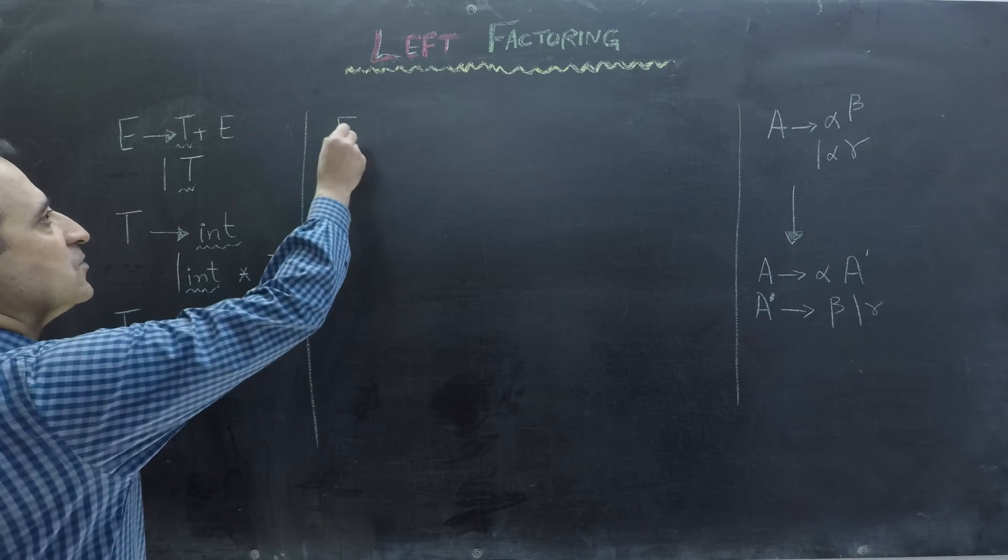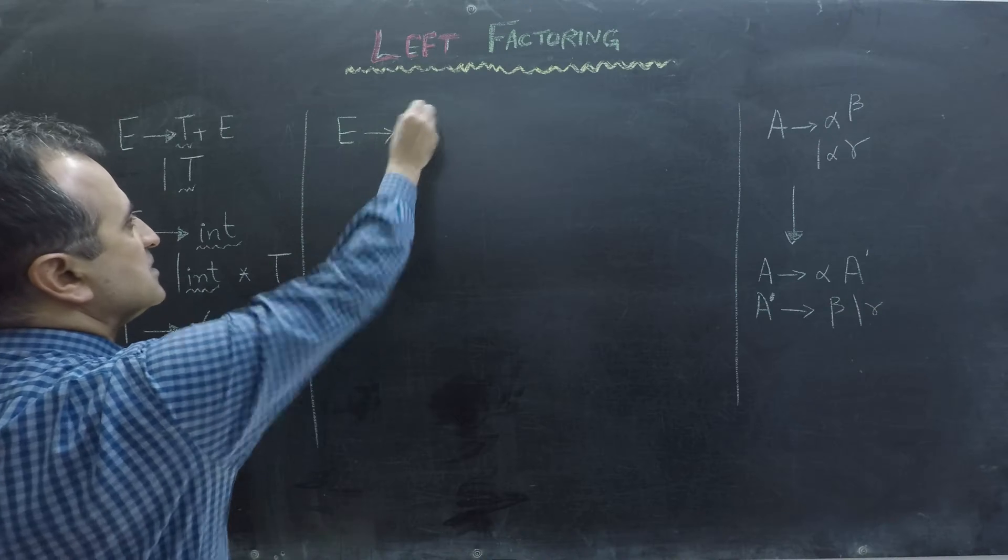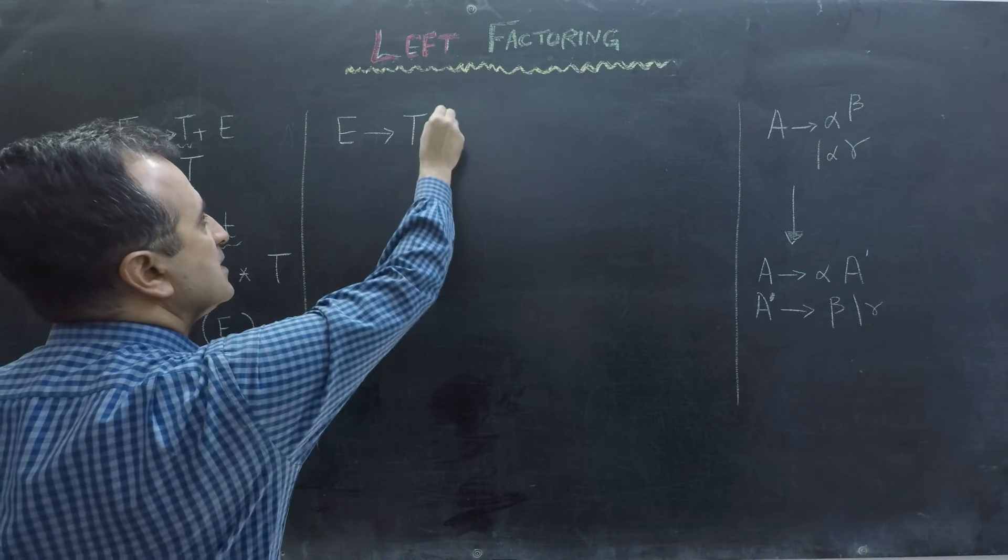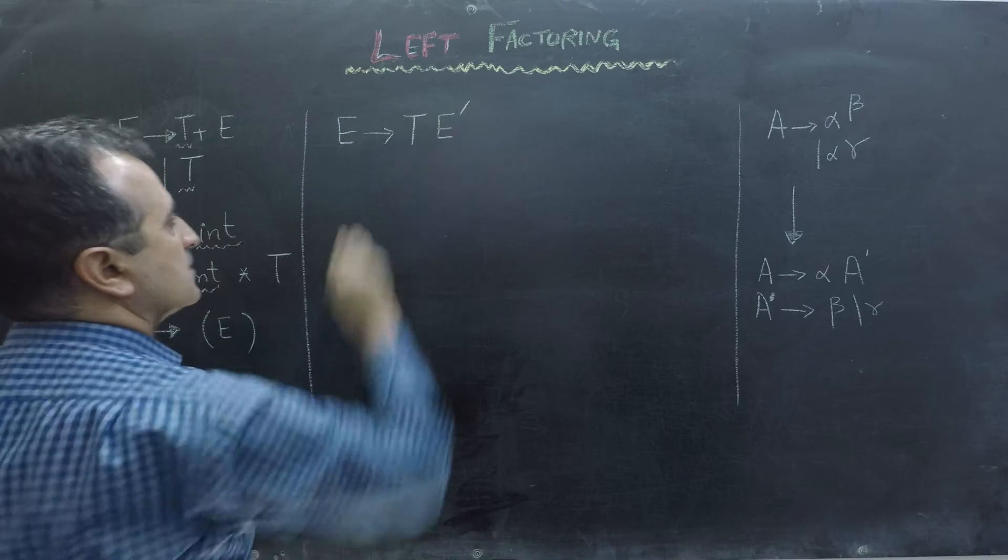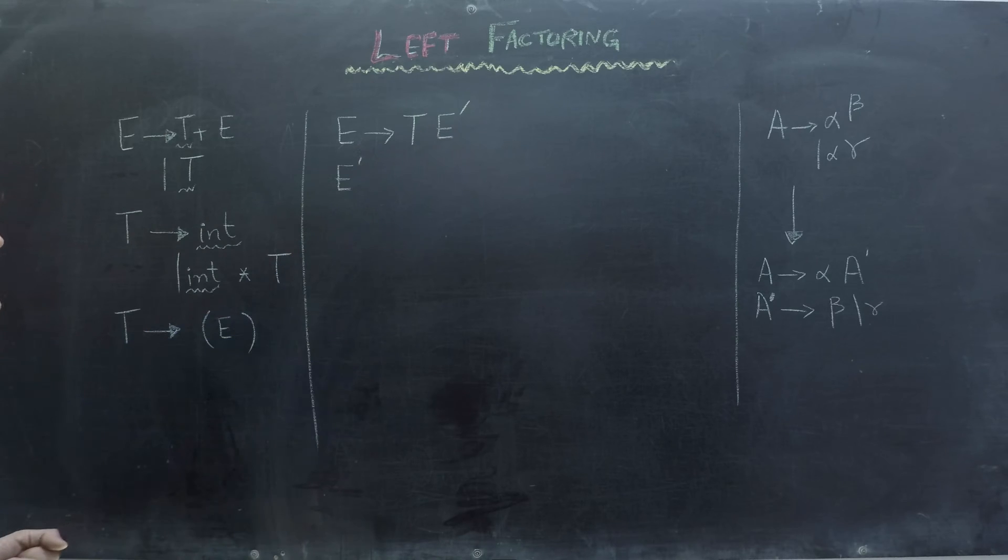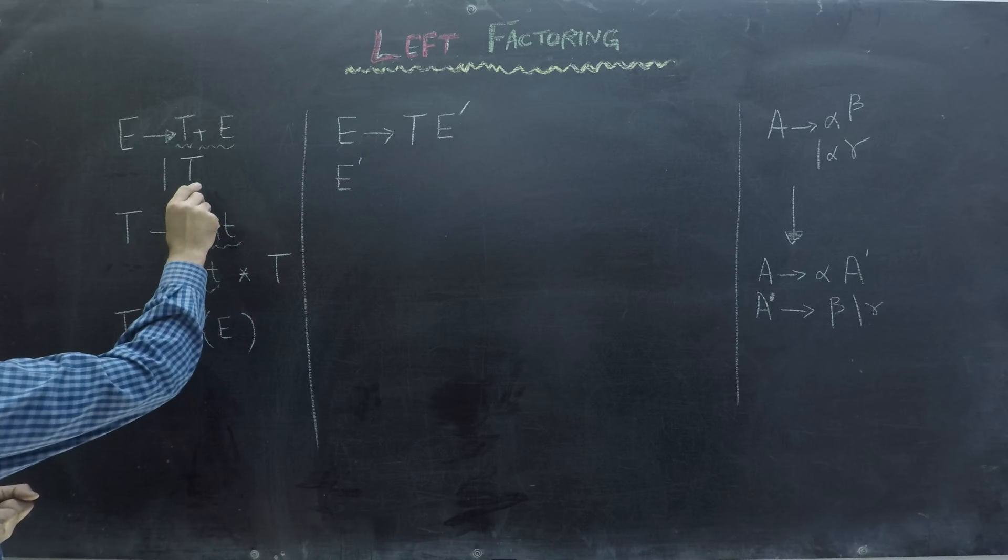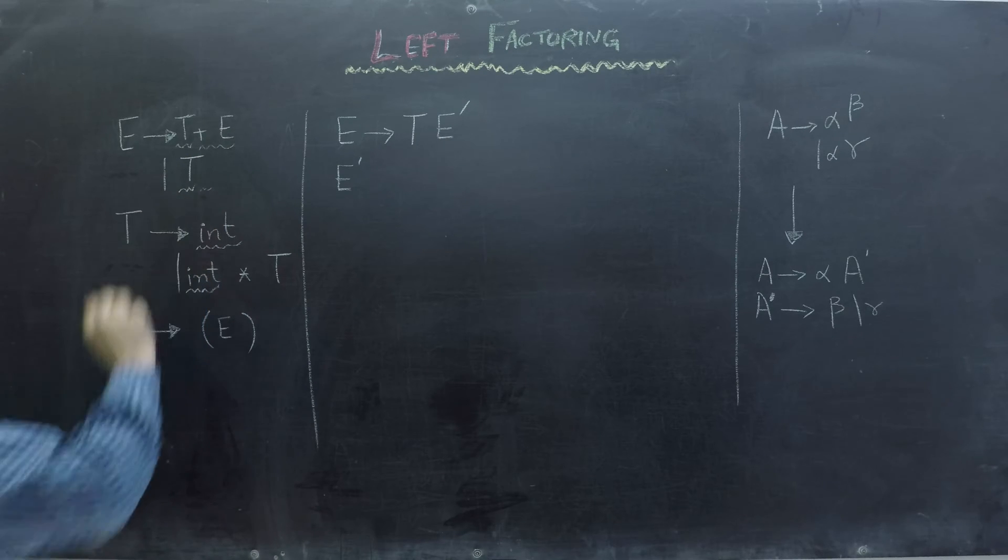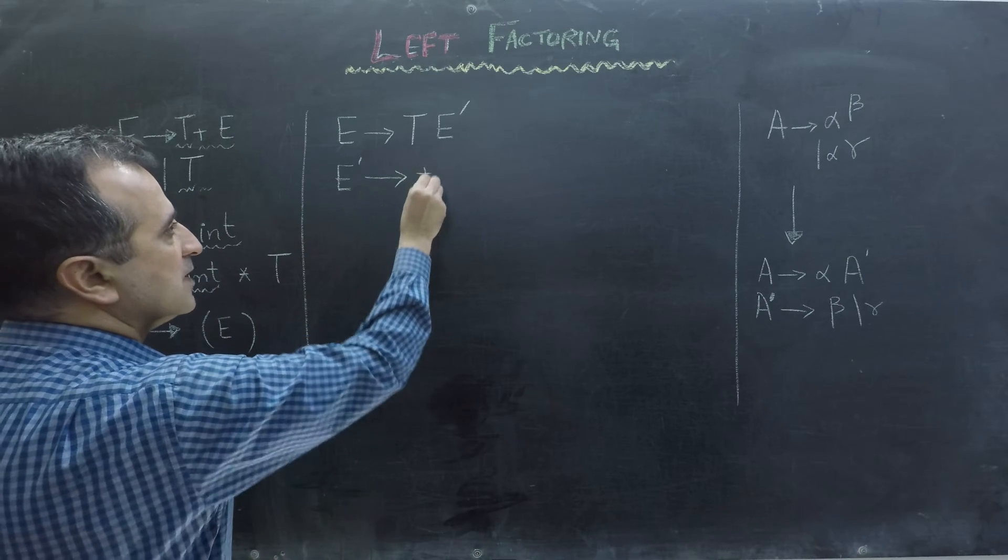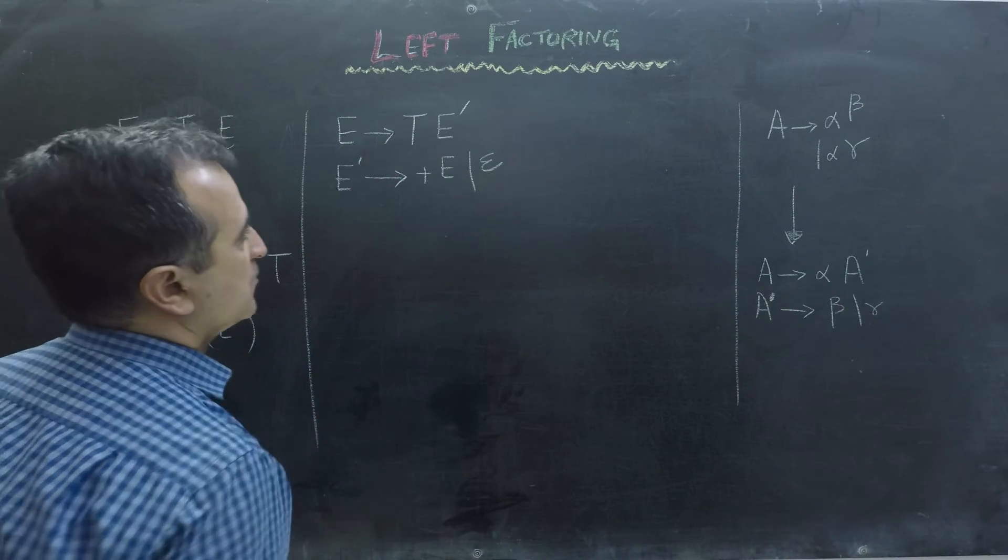So here we have to write E goes to T, which is a common prefix once, and then we have to write here E bar. And then we have to write E bar. Now E bar can go to plus E or epsilon, because here we have nothing. So E bar goes to plus E or epsilon. Epsilon is for the empty string.